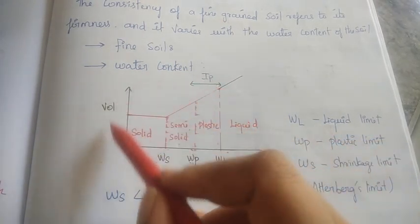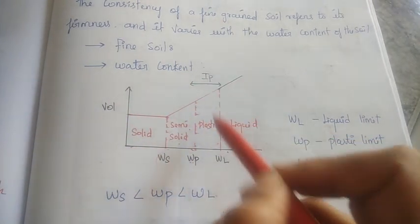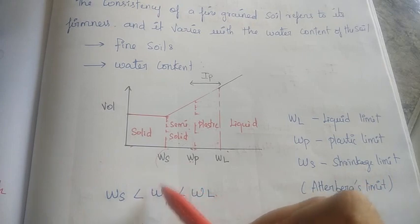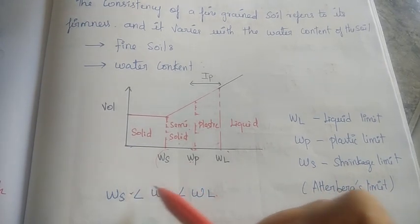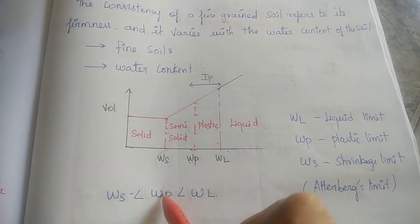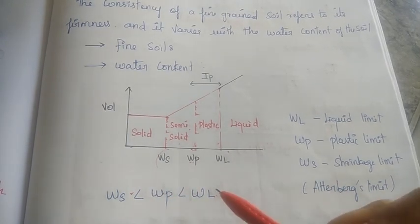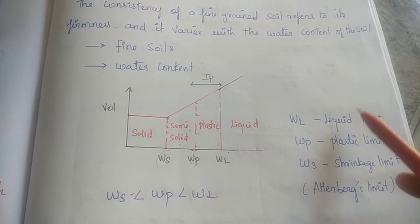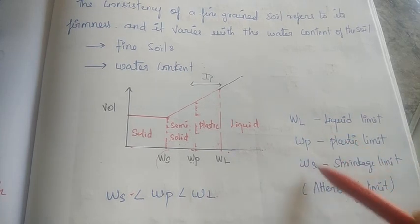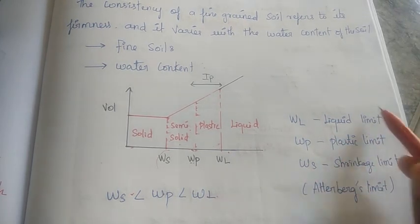From liquid limit to plastic limit is the plasticity range. The sequence of Atterberg limits is: first Shrinkage Limit, next Plastic Limit, then Liquid Limit.